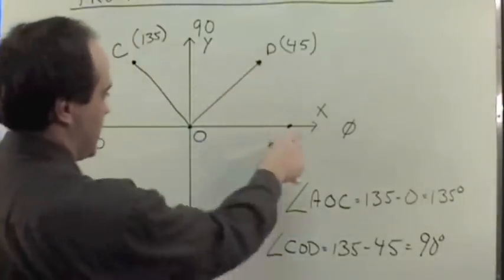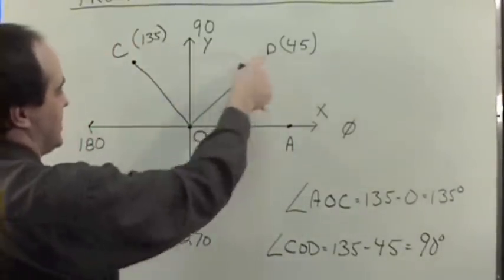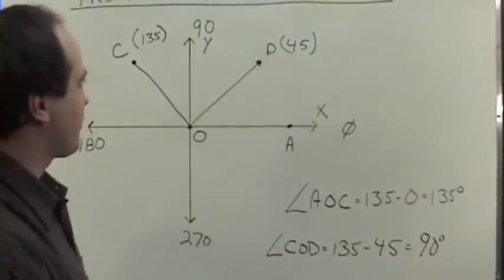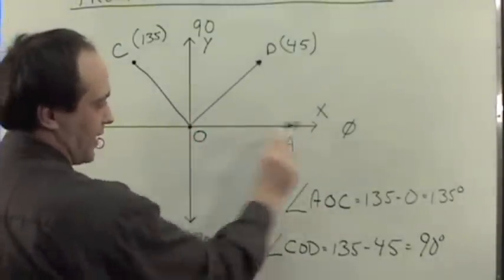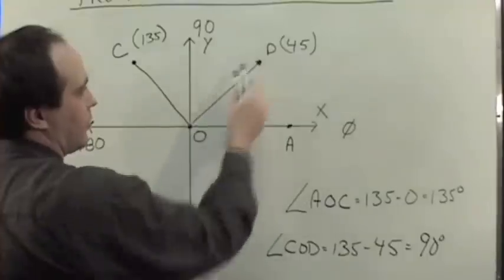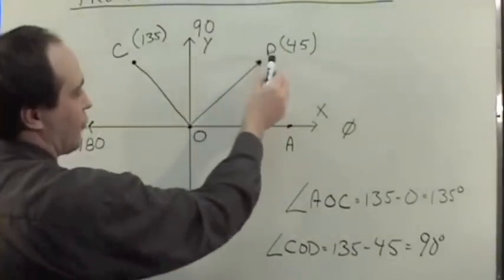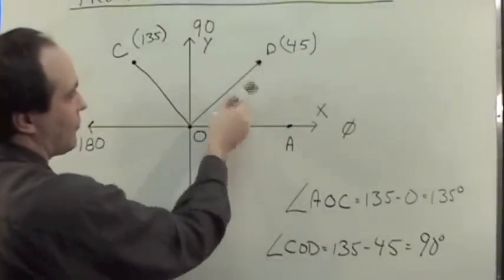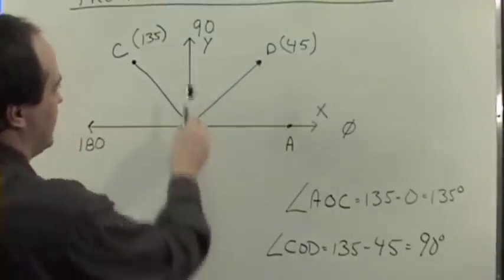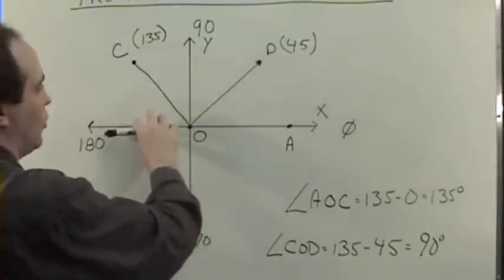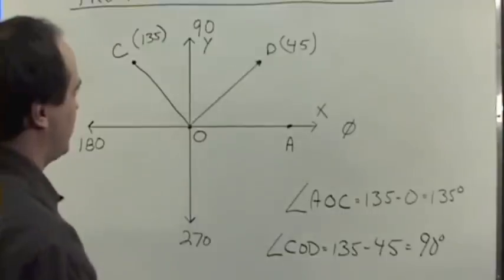So I've got four points: A, O, C, and D on this graph. And I've got lines drawn. Obviously A is on the x-axis, D is at a 45 degree angle—it's halfway between zero and 90—and halfway between 90 and 180 is a 135 degree angle.